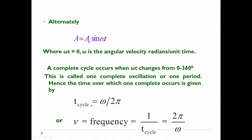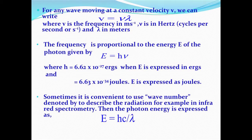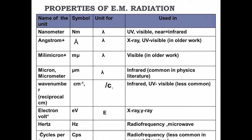A complete cycle is described by ω/2π, where 2π is 360 radians. Frequency μ is given by 1/T = 2π/ω, where ω is the angular velocity in radians per unit time. For any wave moving at constant velocity v, we can write E = hcν/λ, where h is Planck's constant: 6.62×10⁻²⁷ ergs or 6.63×10⁻³⁴ joules. Energy is normally expressed in joules. Sometimes it is convenient to use wave number μ̄. All these symbols and units are explained in a table.